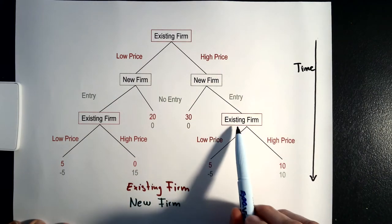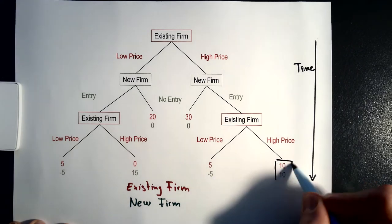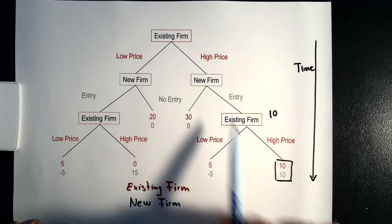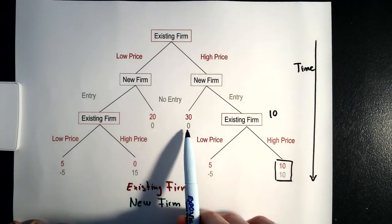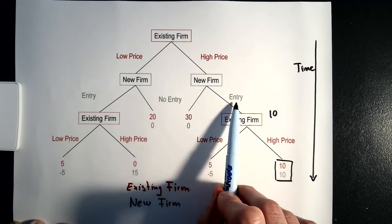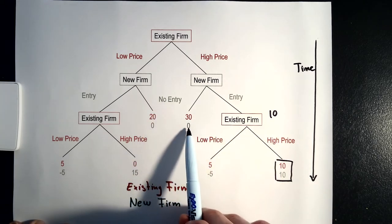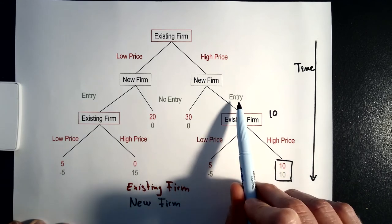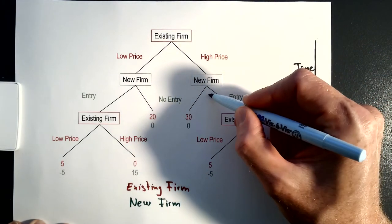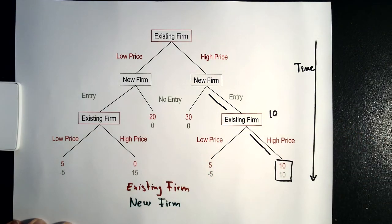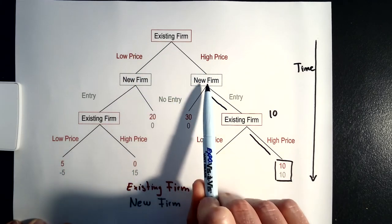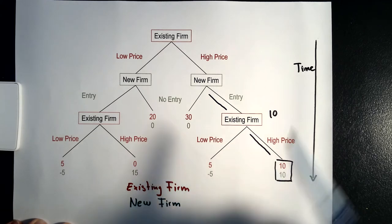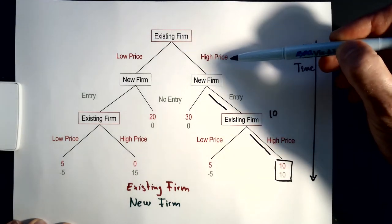Starting with the branch where the existing firm priced high and the new firm entered the market: we have seen that the existing firm is going to price high, meaning the payoff from entry for the new firm is going to be 10. The new firm has to decide whether to enter the market and get a payoff of 10 or not enter and get a payoff of zero — and of course the firm is going to choose entry. So if the existing firm prices high, the new firm enters, and the payoff for the existing firm from pricing high at the beginning is going to be 10.